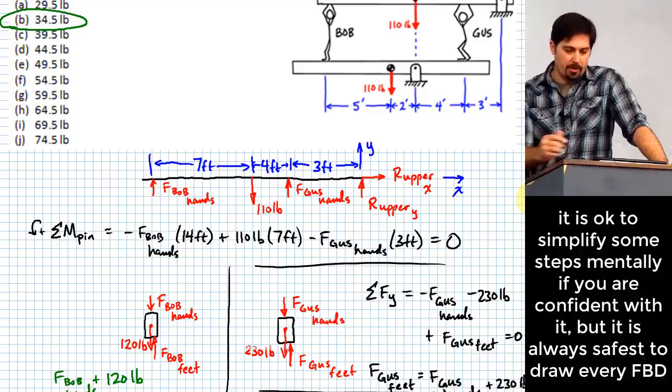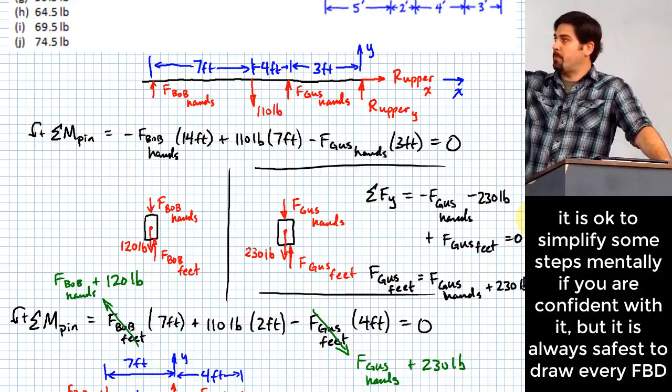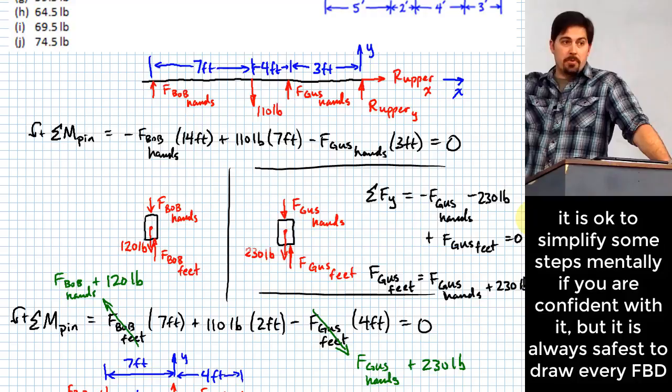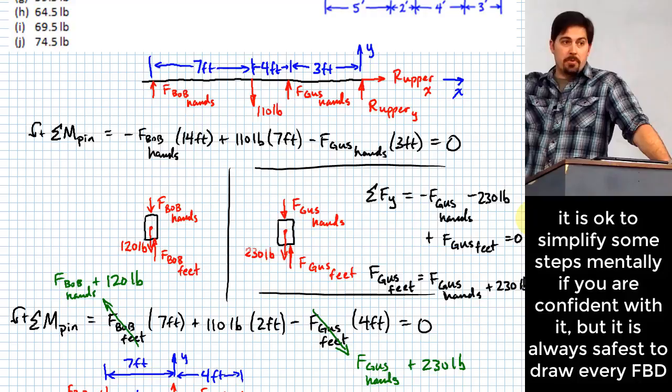So, you know, that is a way of doing it where you really spell out for each body exactly how each body works. Some people are able to look at a problem like this and very directly apply these relationships of things like F_Bob hands plus 120 pounds or F_Gus hands plus 230 pounds. That's okay as long as you can correctly do that in your head mentally. But this shows why that is the case with the free body diagrams. So hopefully that's helpful. I know we're out of time. I'll see you all later.